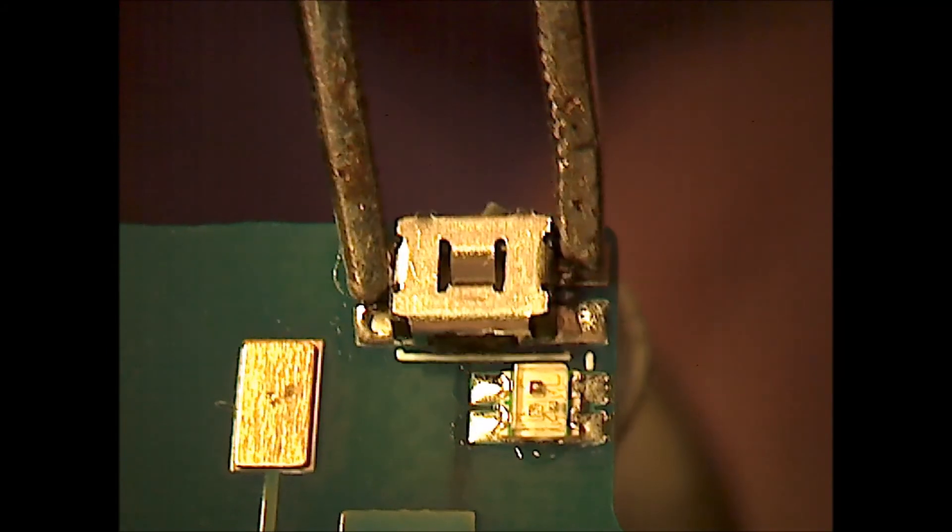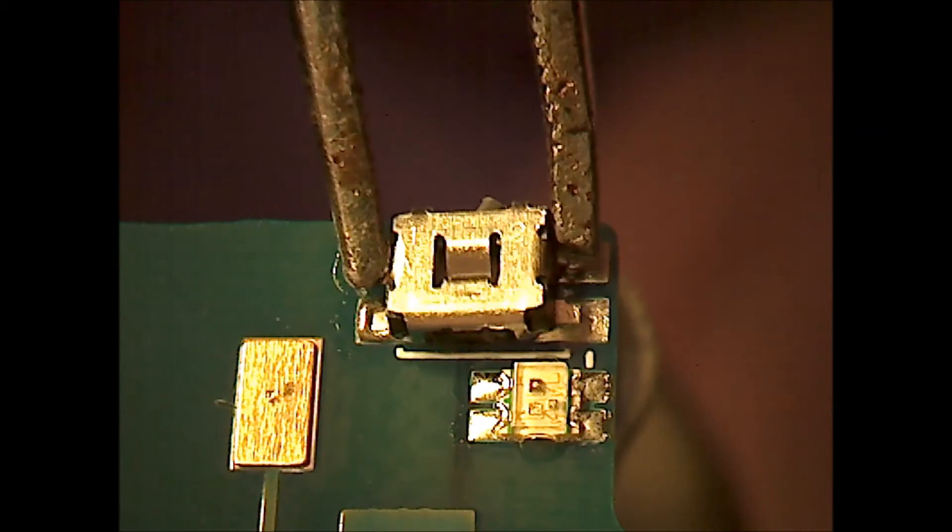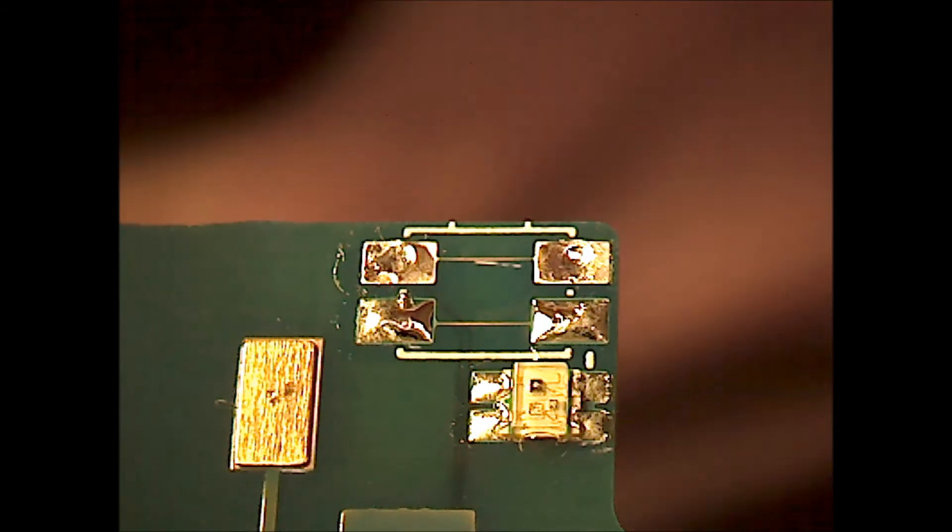Once it heats up, it'll come right off. As you can see, it's already getting loose. The solder on this part of the board is pretty thin here, so the solder heats up quickly.